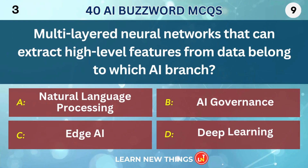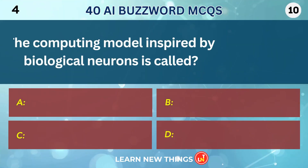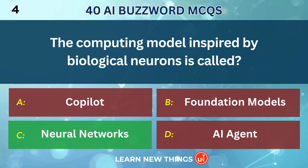Multi-layered neural networks that can extract high-level features from data belong to which AI branch? Deep Learning. The computing model inspired by biological neurons is called Neural Networks.